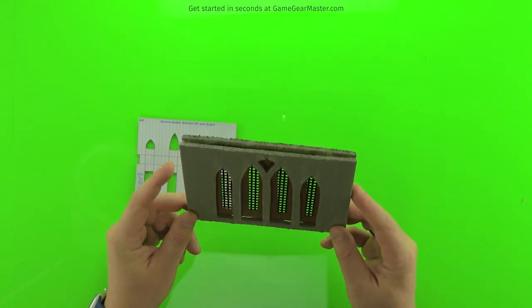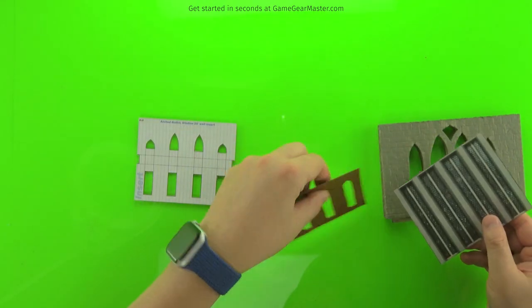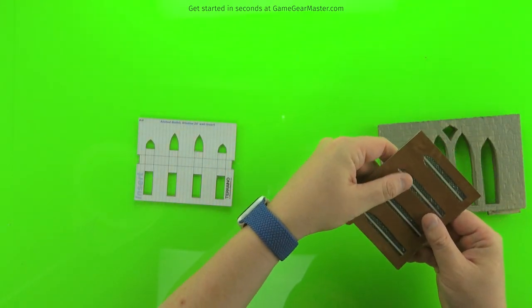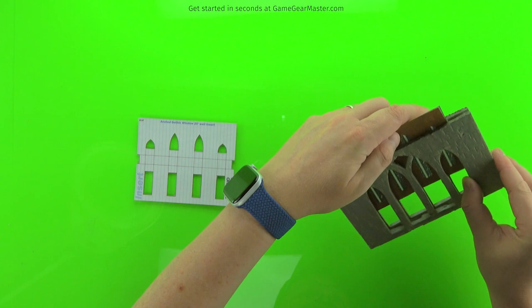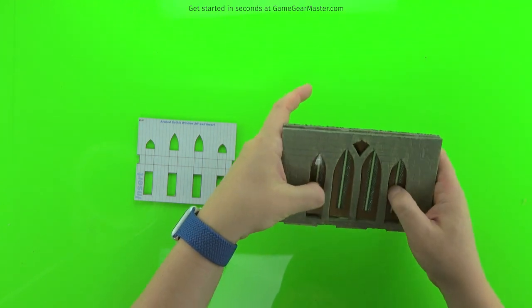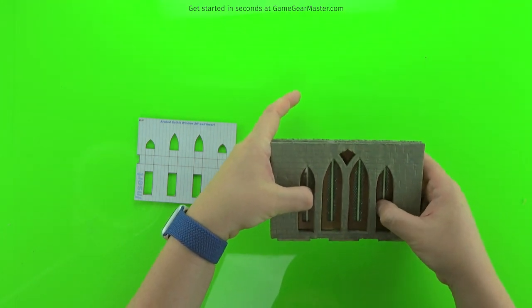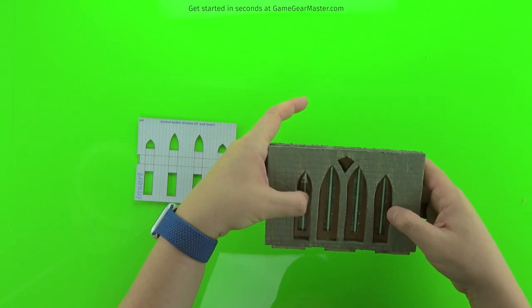You could also use them as an added accent or detail onto the printouts. So you can do a different shaped window by just adding this cardboard sheet on top of it. There are so many possibilities with this and I'd love to see what you guys come up with.